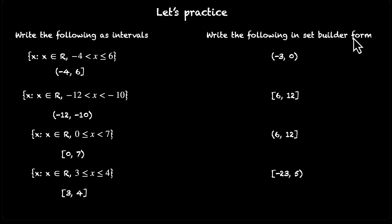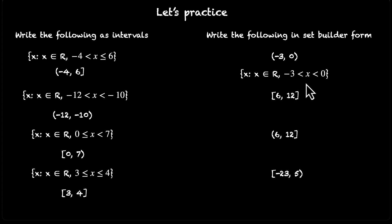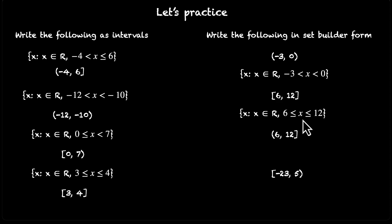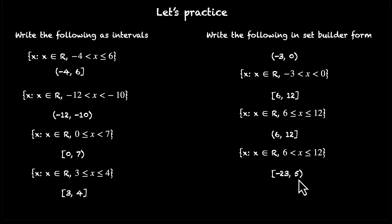Now write the following in set-builder form. For (−3, 0): all x such that x belongs to real numbers and −3 < x < 0 — strict inequalities since neither endpoint is included. For [6, 12]: 6 ≤ x ≤ 12, including both. For (6, 12]: 6 < x ≤ 12, where 6 is not included and 12 is. Finally, [−23, 5): −23 ≤ x < 5, where −23 is included and 5 is not. We've learned how to represent sets as intervals and visualize them on a number line.